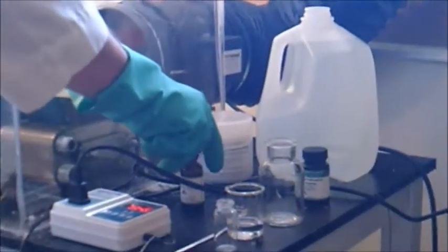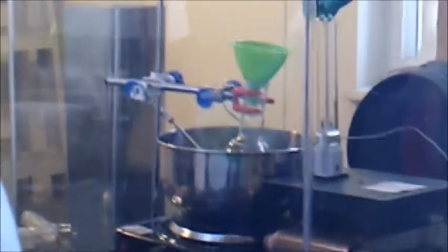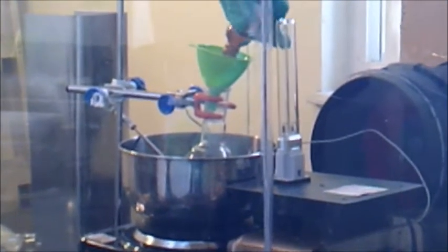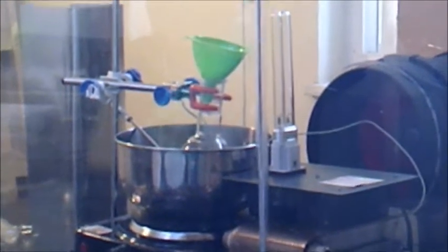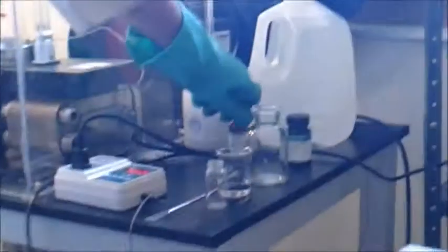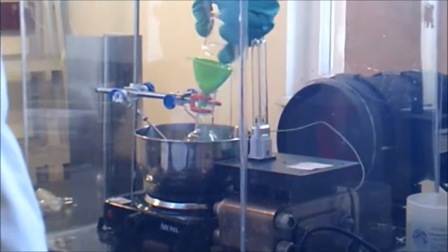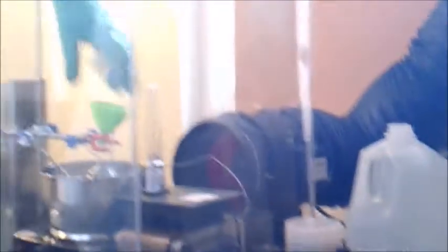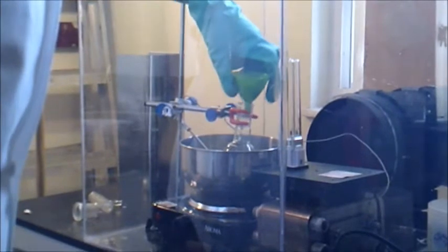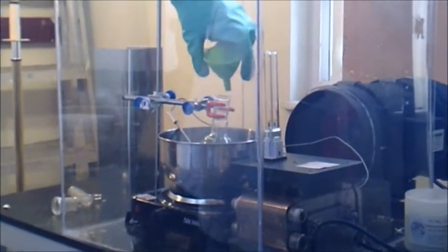Okay and next we are going to add our formamide. And again 30 milliliters of formamide will be added. And lastly we add our 20 milliliters of distilled water. So we have our 20 milliliters over and then I'll add to our flask.